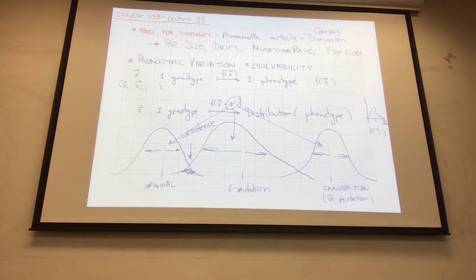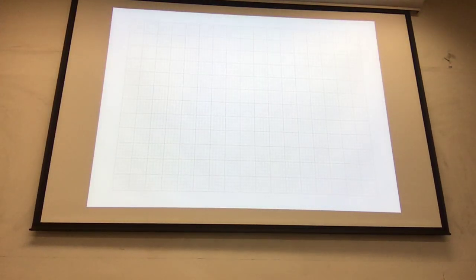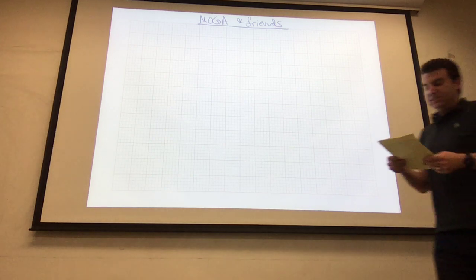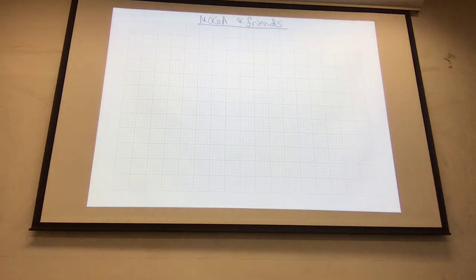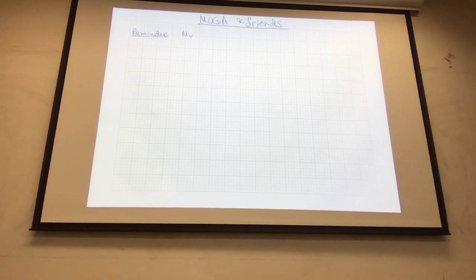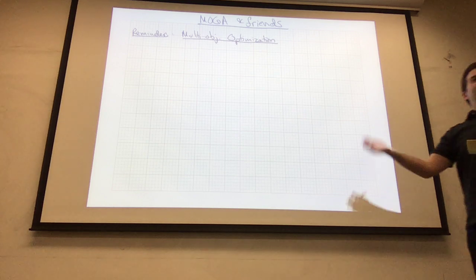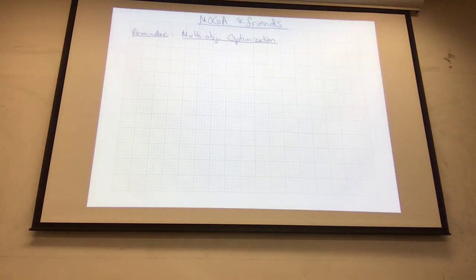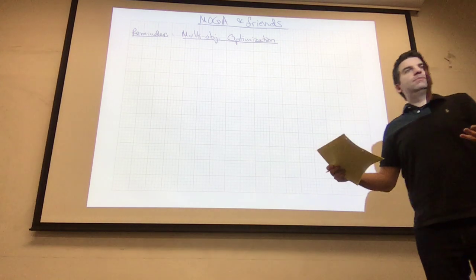Getting back to where we were — we are now within the section on MOEA and friends: multi-objective genetic algorithms and their relatives. As a reminder, we're now in the space of multi-objective optimization. Up until now everything was a single objective f that we wanted to maximize or minimize. Now we have to come up with a new way to think about what happens when we have multiple objectives.